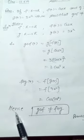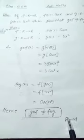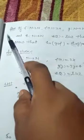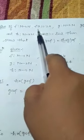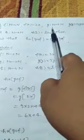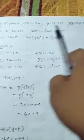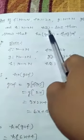Hence gof is not equal to fog. Now comes the second question: if f from N to N with f(x) = 2x, g from N to N with g(y) = 3y + 4, and h from N to N with h(z) = sin z, find h∘g∘f.